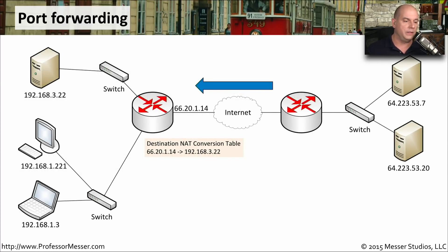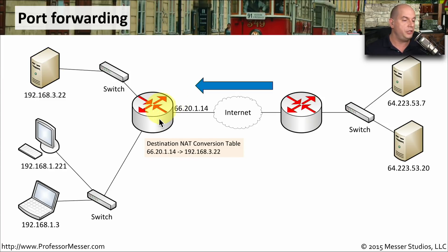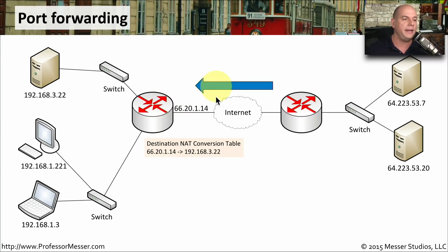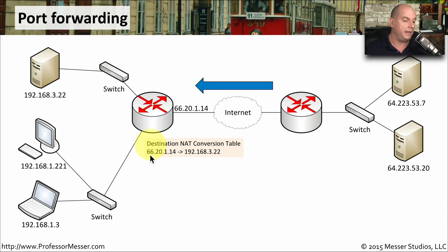Here's a graphical view of this communication. Let's say that we'd like to configure 192.168.3.22 as a web server on our network. We'll make a configuration change inside of the router that says if anybody is connecting to 66.20.1.14, which is our external public IP address, and anybody's trying to access port 80, then let's send them automatically to our internal IP address and make sure they're able to communicate to that web service. So if someone on the outside is communicating to 66.20.1.14, this destination NAT, or port forwarding, will automatically send everything to the correct internal IP address.